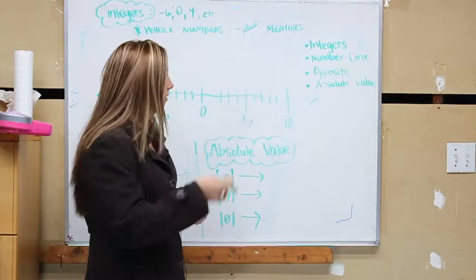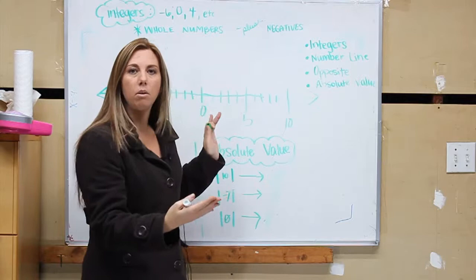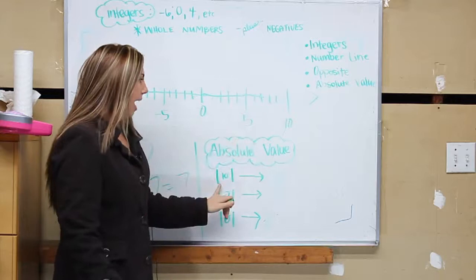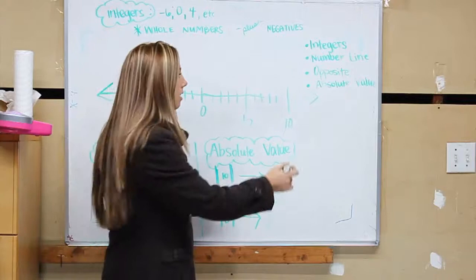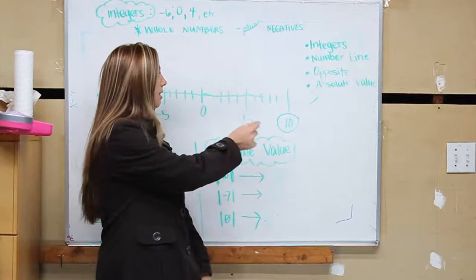Now let me show you absolute value. Absolute value, if you can just remember, is how many spots away from zero a number is. So if we go back to the number line, if I say what's the absolute value of ten - and you mark absolute value by these straight lines on each side of the number - so if I want to know what the absolute value of ten is...